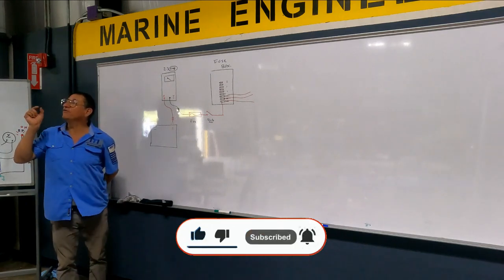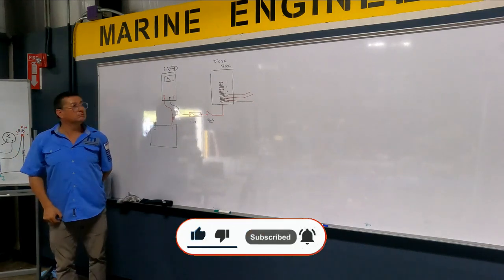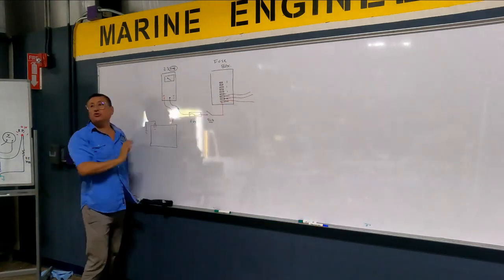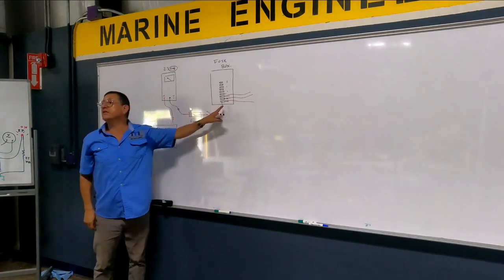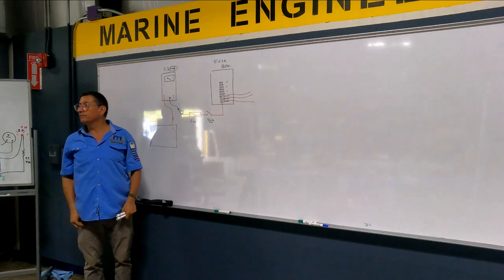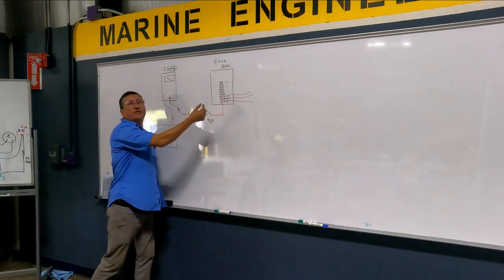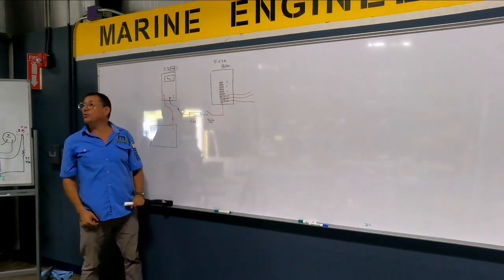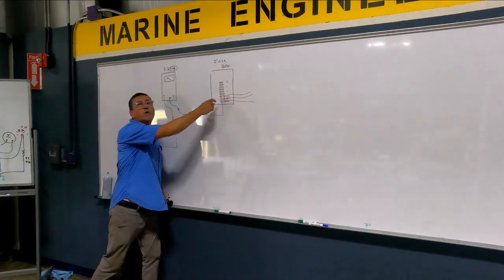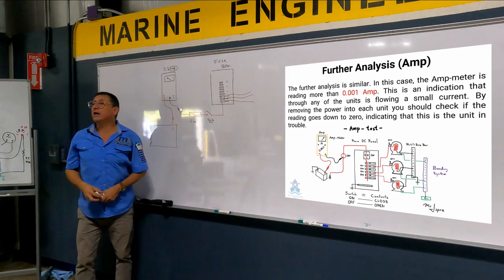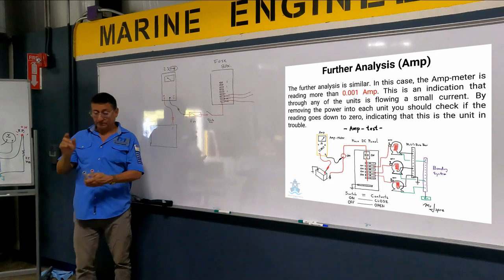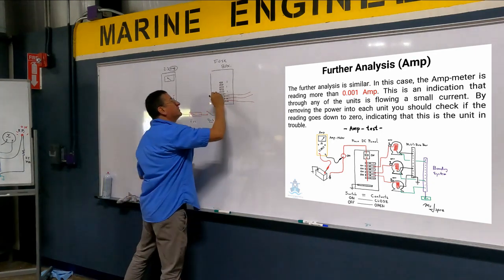I am going to start to remove fuse by fuse. I remove the first one and continue 2.3 amps. That circuit is the problem? No. I put it back the fuse. I'm going to remove the second fuse. Continue 2.3 amps. I remove the third one. And now reduce 1.2 amps. This is one of the problems. One of the problems is that fuse.